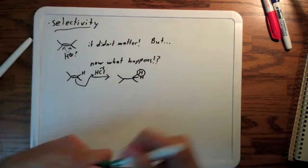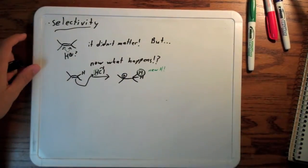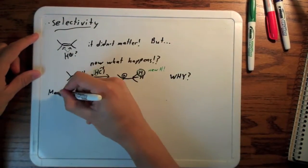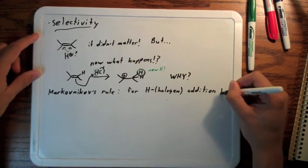What's observed to happen is that the hydrogen adds to the side of the bond that already has more hydrogens. Just for emphasis, the new H is highlighted in green. Okay, but why?